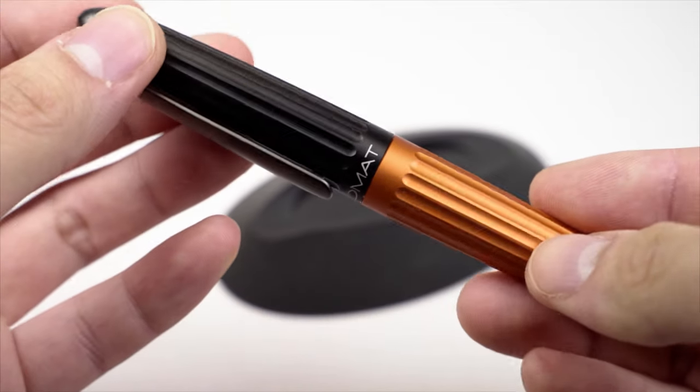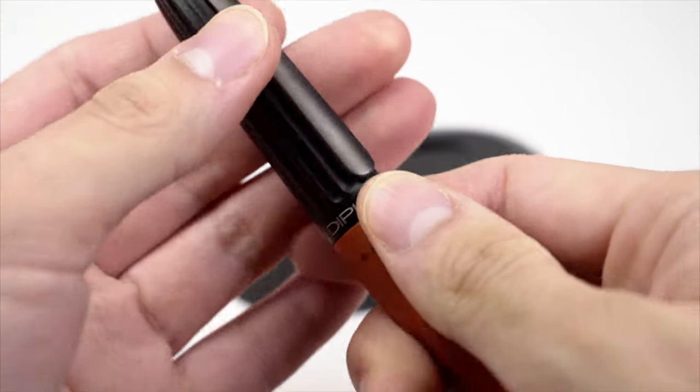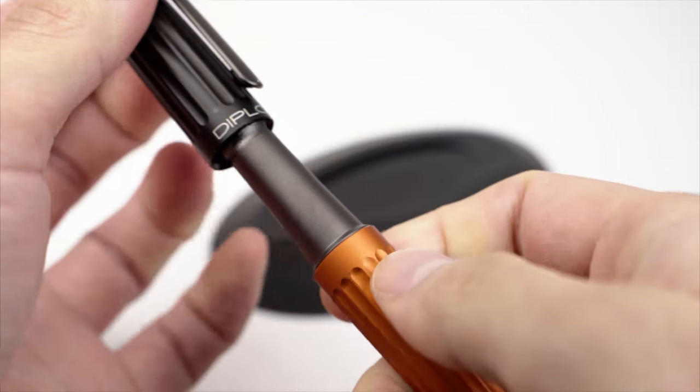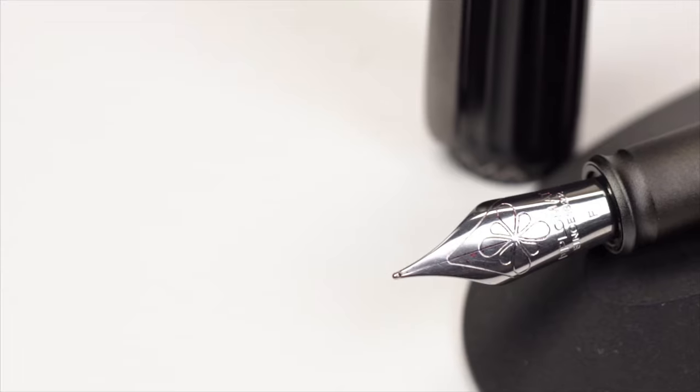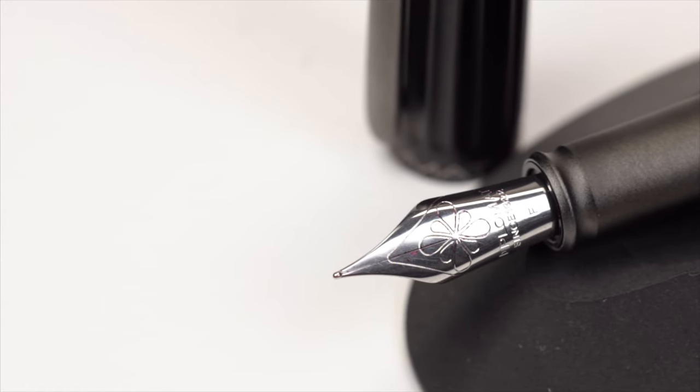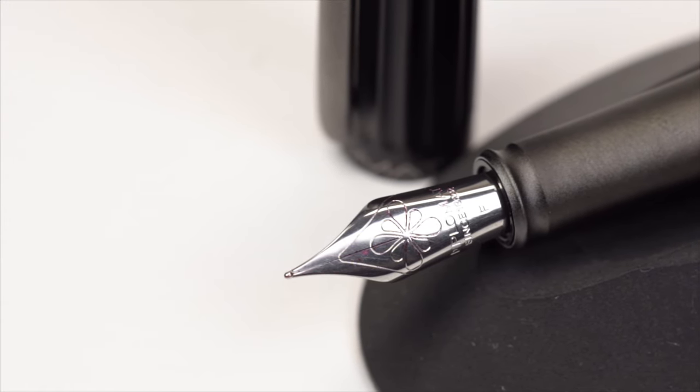The cap uses a snap-on design and is quite tight. Beneath the cap reveals a beautifully embossed number 6 size YOWO nib on a metal section. As mentioned earlier, I have the steel nib version. The gold nib will be two-tone gold and silver.